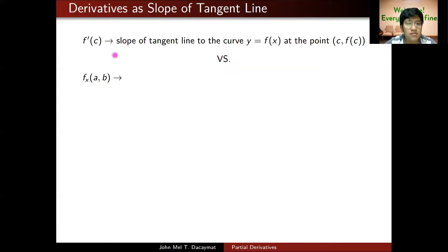So, for example, f sub x of (a, b) is interpreted as the slope of your tangent line to the curve of intersection of the surface z equals f(x, y) and y equals b. Recall the graph of z equals f(x, y) is a surface, so y equals b is a plane. The intersection is just a 2D curve, and the tangent line to that curve at the point (a, b, f(a, b)) is the geometric interpretation for f sub x of (a, b).